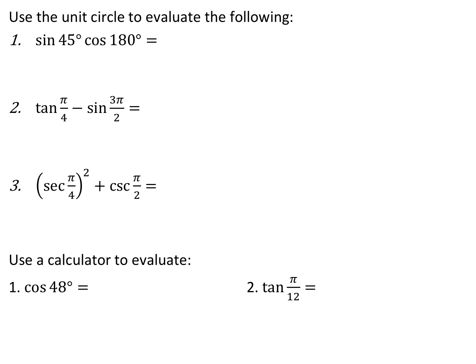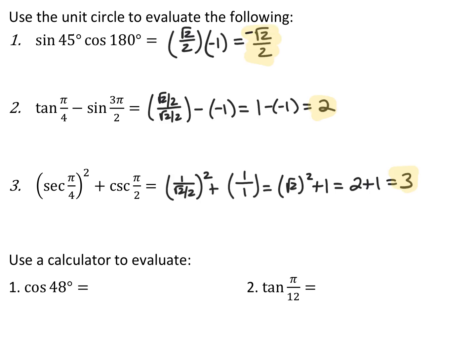You can evaluate trig functions and then do arithmetic with them. Sine of 45 degrees times cosine of 180 degrees: root 2 over 2 times negative 1 equals negative root 2 over 2. Tangent of pi over 4 is 1, and sine of 3 pi over 2 is negative 1, so 1 minus negative 1 equals 2. Secant of pi over 4 is root 2, and cosecant of pi over 2 is 1, so root 2 squared plus 1 equals 3.